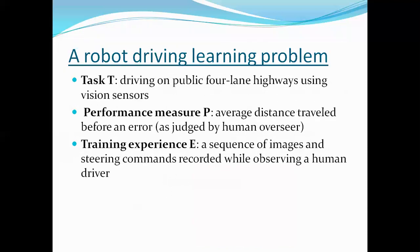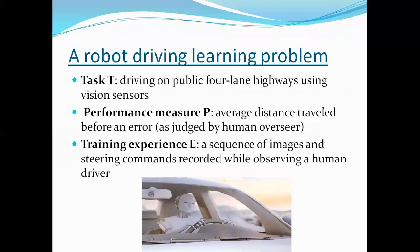Next is the robot driving learning problem. Task T is driving on a public four-lane highway using vision sensors. Performance measure P is the average distance traveled before an error occurs. Training experience E is the sequence of images and commands recorded while a human was driving on the same route. These are fed as training data to the learning problem.